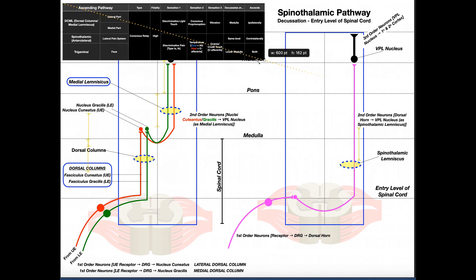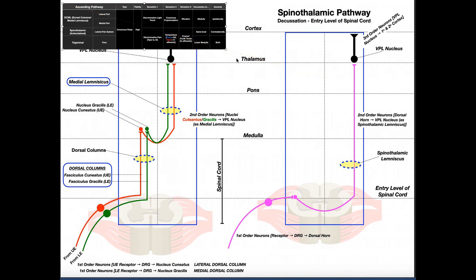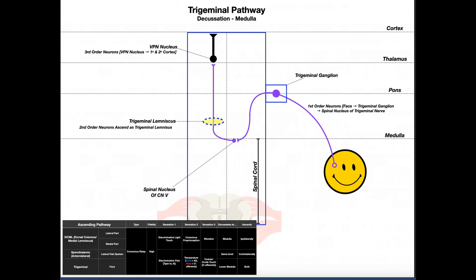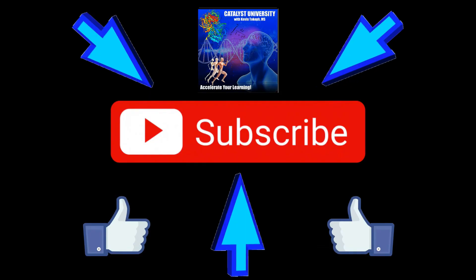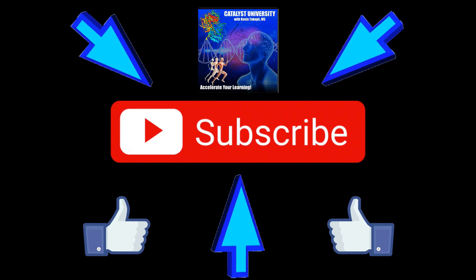Hopefully this video gave you a good understanding of the spinothalamic pathway. In the next video, we're going to look at the trigeminal pathway — a little more complicated than spinothalamic, but still much easier than DCML. Please make sure to like this video and subscribe to my channel for future videos and notifications. In the following video, we're also going to look at the withdrawal reflex. Thank you.